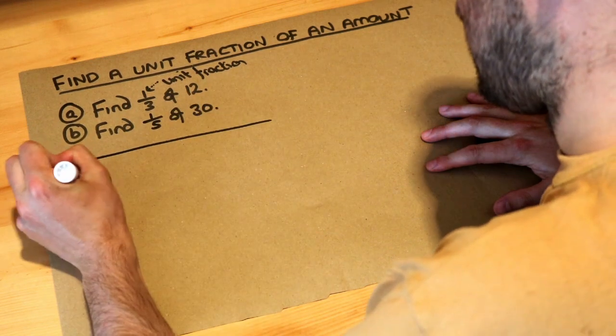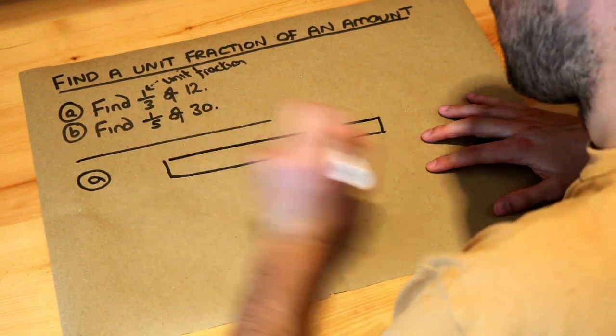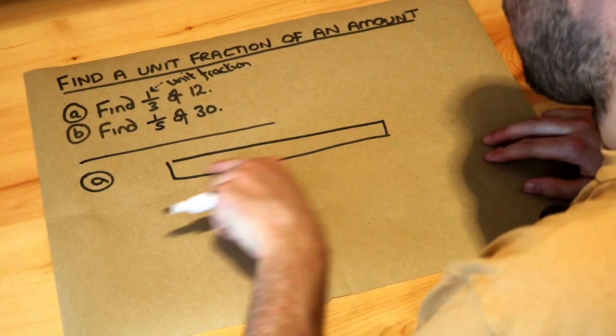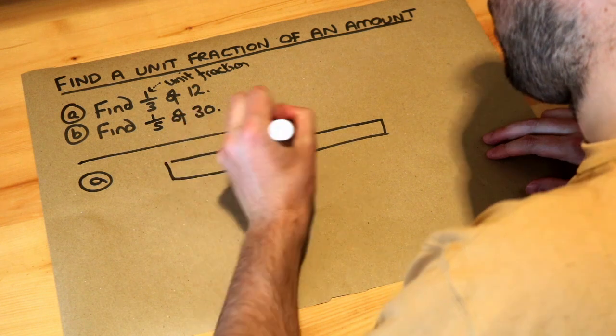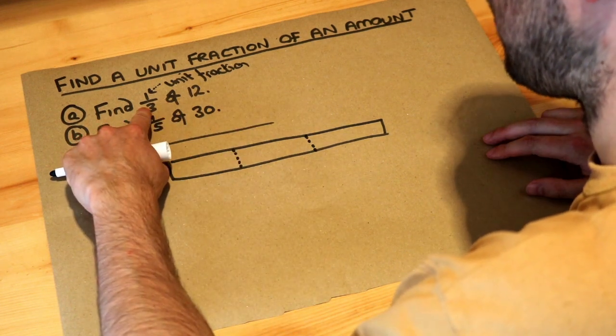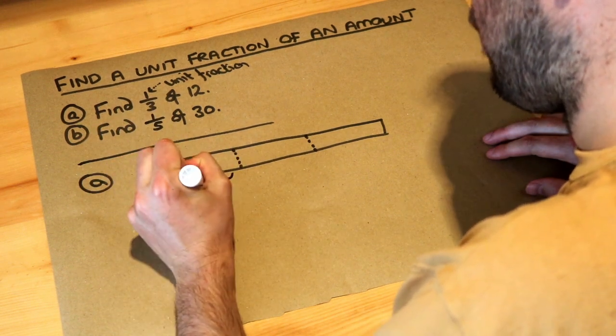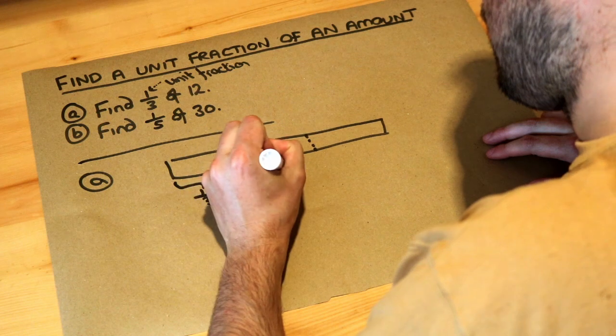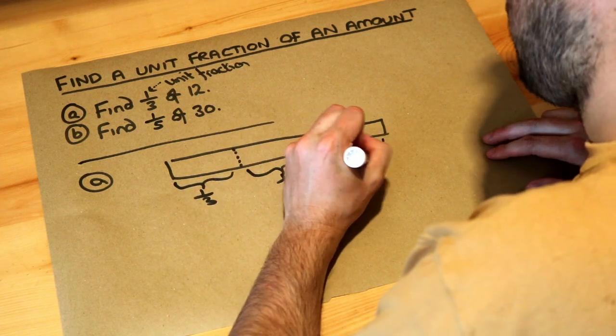If I want to find a third of this bar, that means I want to split it into three parts. Whatever that bottom number is, the denominator, that's how many parts you're splitting into. So this is a third of the amount, this is a third of the amount, and this is a third of the amount. We've split the thing into three parts.